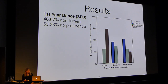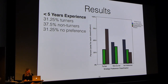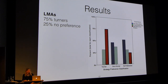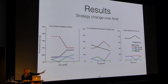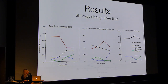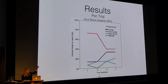Looking closer, the first-year dance students were split between non-turners and no preference. The less-than-5-years group was split across all three strategies. The LMAs were primarily turners — they updated their heading. Looking across strategy over time, the Laban Movement Analysts were very consistent across all four trials of the virtual path. Whereas the other two groups, especially the less-experienced one, were all over the place. But the first-year dance students seemed to converge over time.